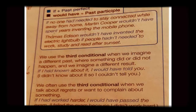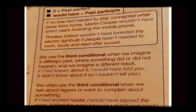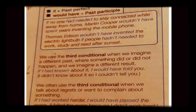On the page, two structures are given: 'if' plus past perfect, and 'would have' plus past participle. In conditional sentences there are two parts: the if-clause and the result clause. The if-clause shows the condition — whether it is fulfilled or not — and the result clause shows the outcome of that condition.